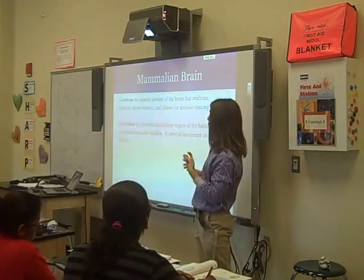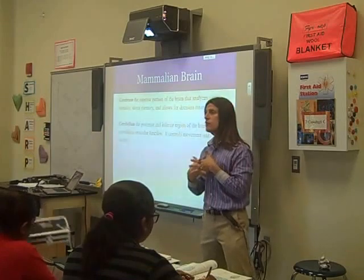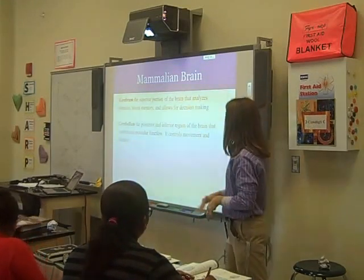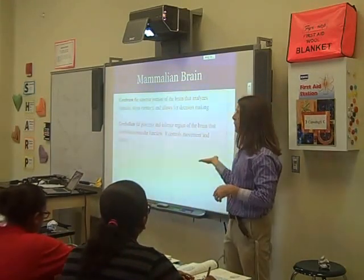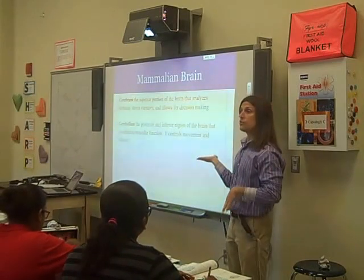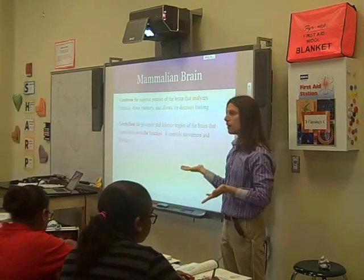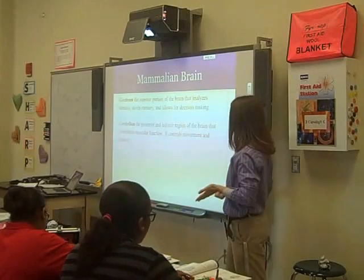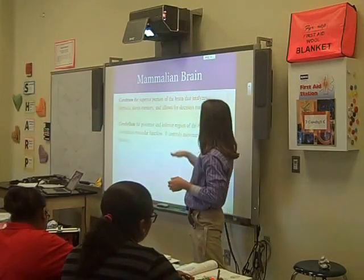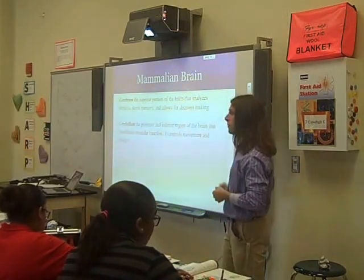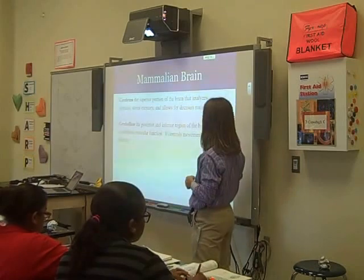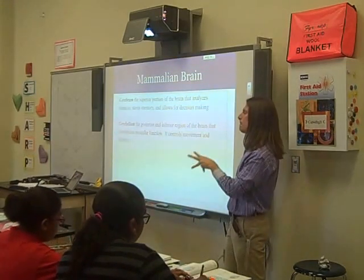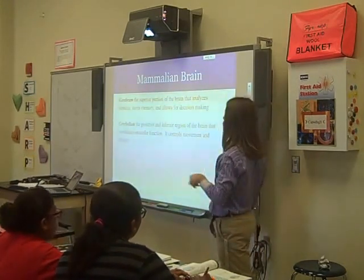The cerebellum is the posterior part of the brain — posterior meaning back or behind — and inferior, meaning lower or below. So it's the back-bottom part of the brain. What it does is it coordinates muscular function. Think about the ability to walk — have you always had that ability? No. Who has ever watched a small child learning to walk? Their cerebellum hasn't yet figured out which muscles to use at which time to make walking happen.